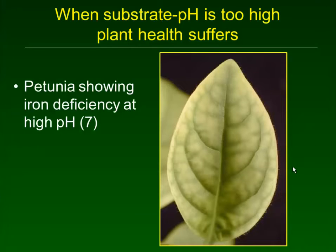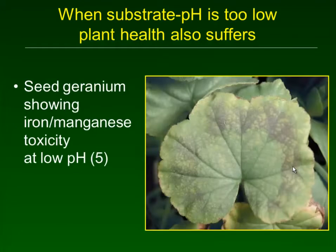It's worth taking a step back and reminding ourselves why substrate pH is important. If the pH is too high then plant health suffers — this shows a petunia showing iron deficiency symptoms, interveinal chlorosis or yellowing between the leaf veins at high pH, because the iron in the fertilizer is not soluble.